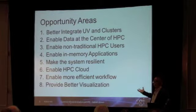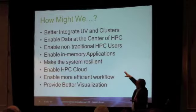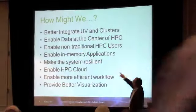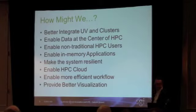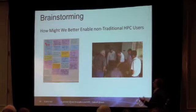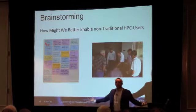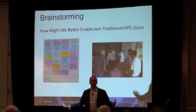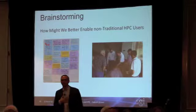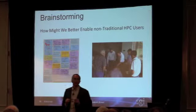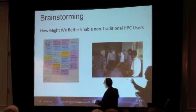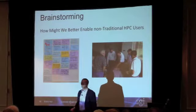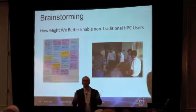Why is it important to come up with opportunity areas like this? Because now you can turn them into problems. You take any of these into a problem statement and say: how might we better integrate UV and clusters? How might we enable non-traditional HPC users? That becomes the start of the next phase — a brainstorming session. You bring the question up as 'how might we,' because that's inclusive and positive. If you say 'why don't you,' people get defensive. So language matters. Then you come up with a bunch of ideas, and select using voting dots given to people.